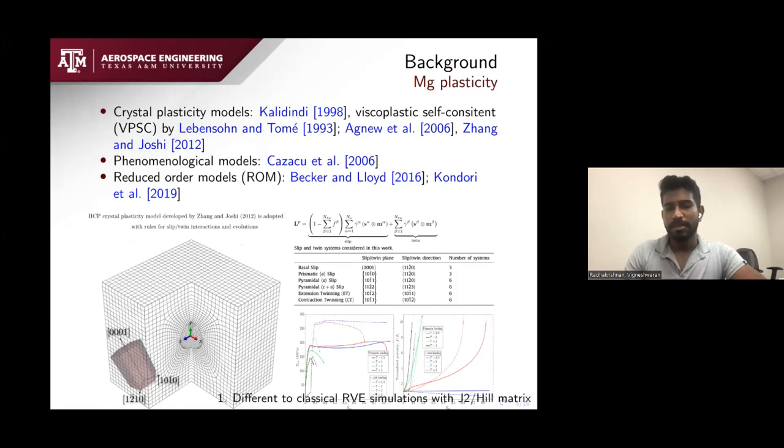What these kinds of models offer is that we can use them to do fine micromechanical studies where the matrix is governed by any of these. For example, if the matrix is governed by the Zang and Joshi crystal plasticity model, one can get a fine micromechanical study of how voids grow in a magnesium matrix. These kinds of studies differ from classical unit cell simulations with J2 or Hill matrix because they are highly direction-dependent.